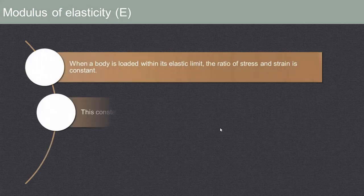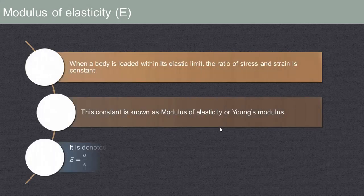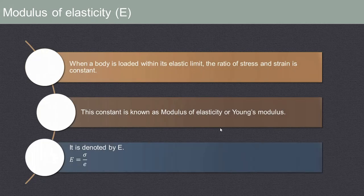Now let us see the meaning of modulus of elasticity, that is capital E. When a body is loaded within its elastic limit, the ratio of stress and strain is constant — stress is directly proportional to strain. This constant of proportionality is known as modulus of elasticity or Young's modulus, and it equals stress upon strain, that is sigma upon E.